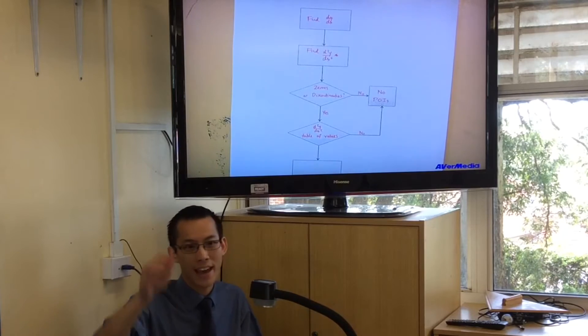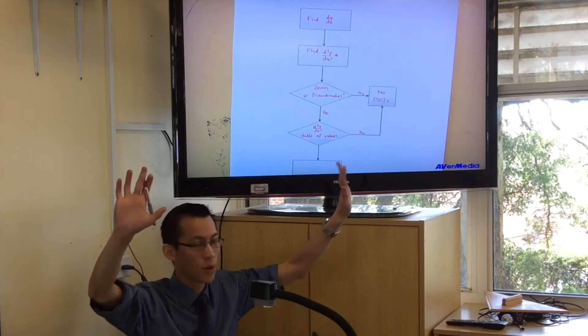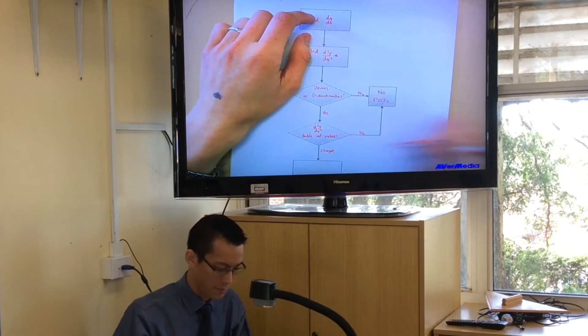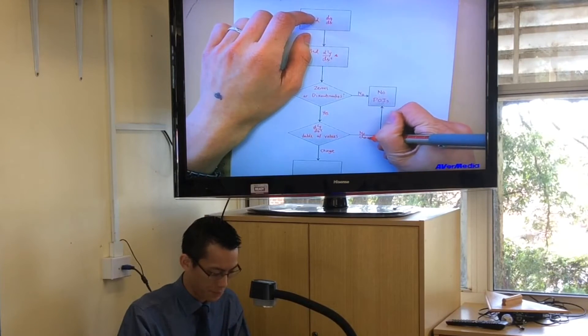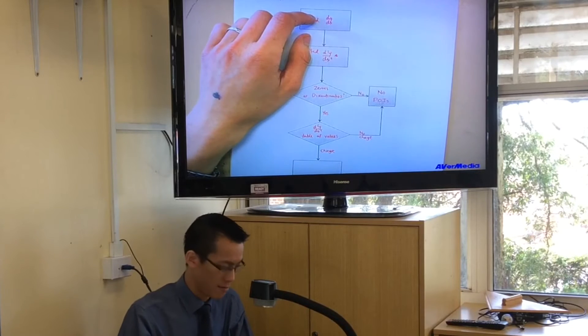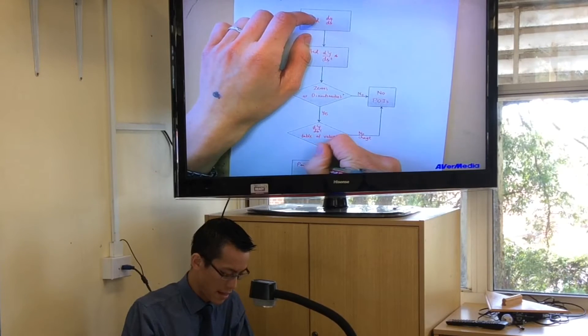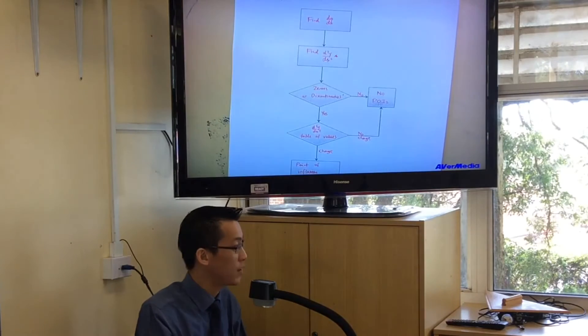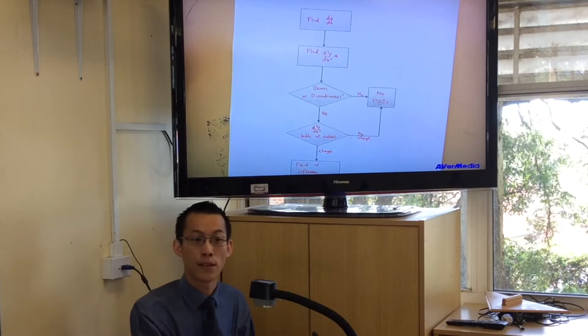Alternatively, I'll see concave up, concave down, or vice versa. I will see a change in concavity. This is no change and this is change. In which case, great, I found a point of inflection. And then at this point I would take that x value, pop it back into the function and get a y value so I know exactly where the point of inflection is.